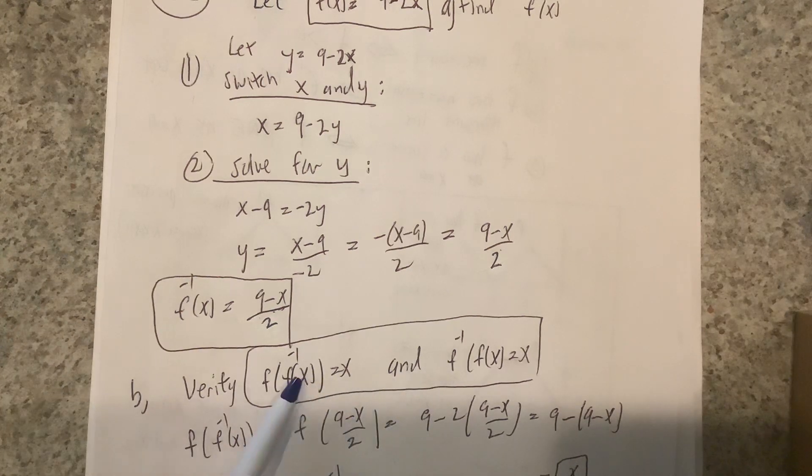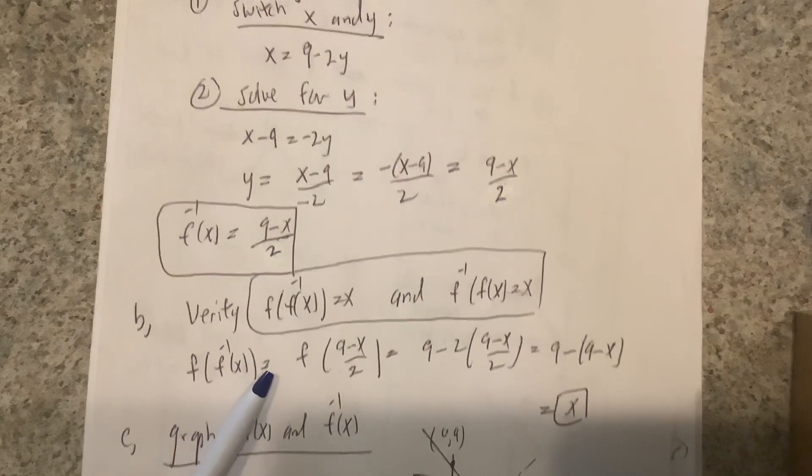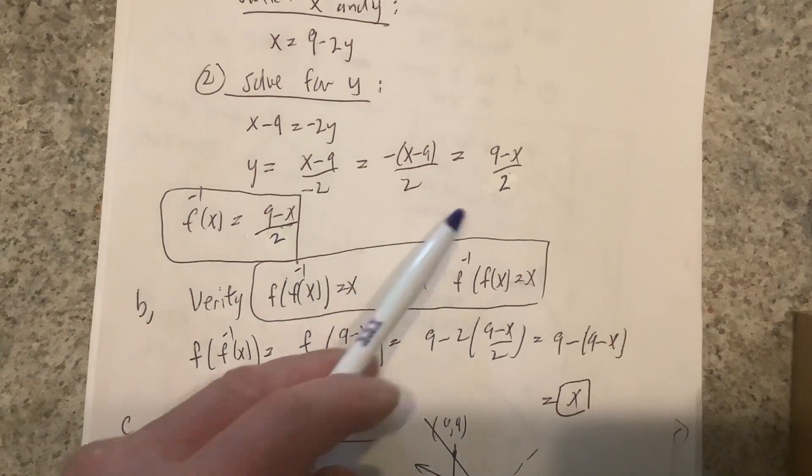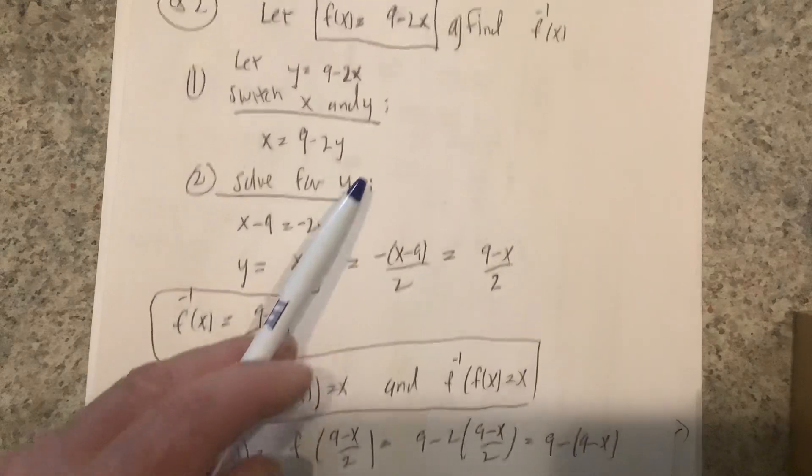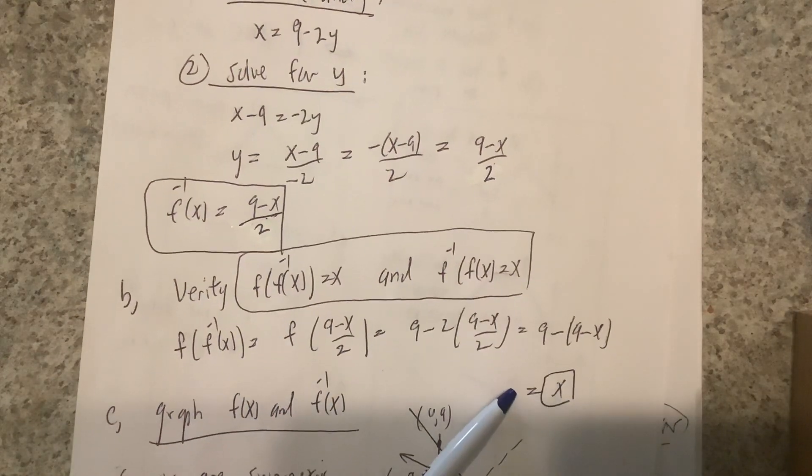So if it asks you to verify that the composition is x, you just form f of f inverse. This is f inverse, so f of this is 9 minus twice it, right? So then if you simplify it, you'll always get x. Now I didn't do the other way around, but that's also true—f inverse of f(x) is also x.